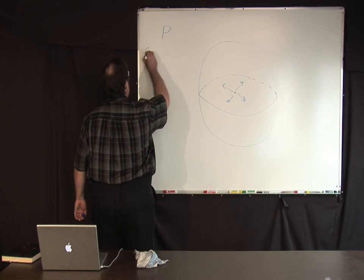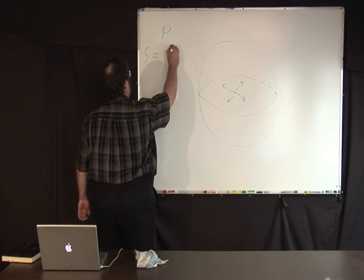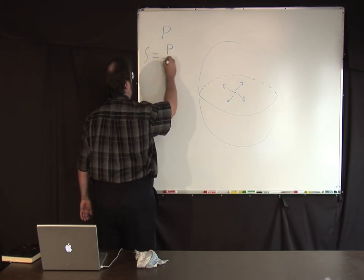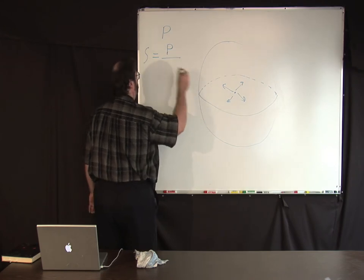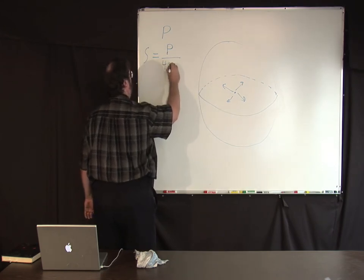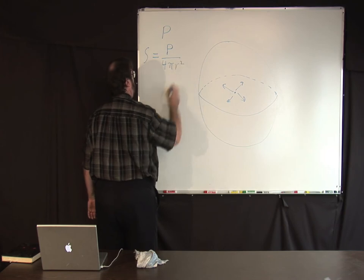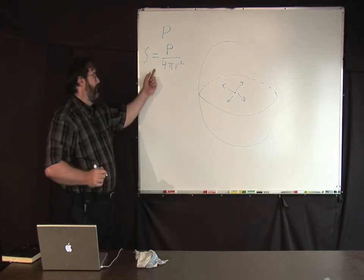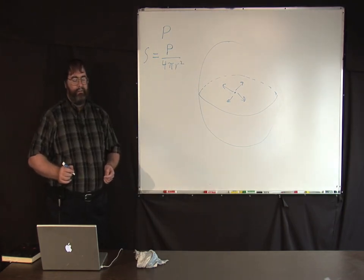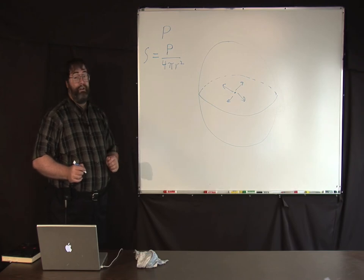The power per unit area, S, is going to be the power radiated divided by the area of the sphere, 4 pi r squared. This is often given the name power density. It's power per unit area.